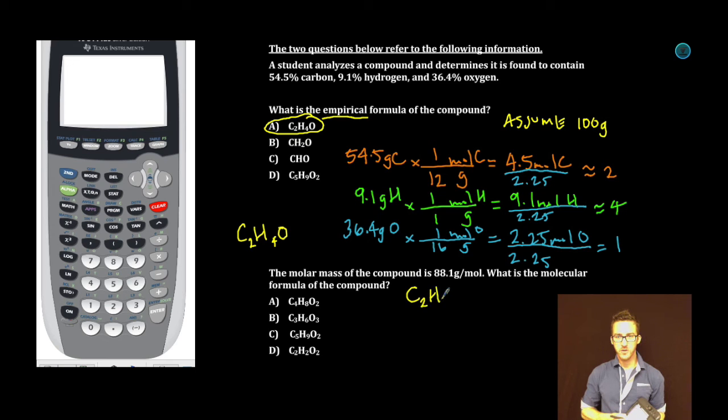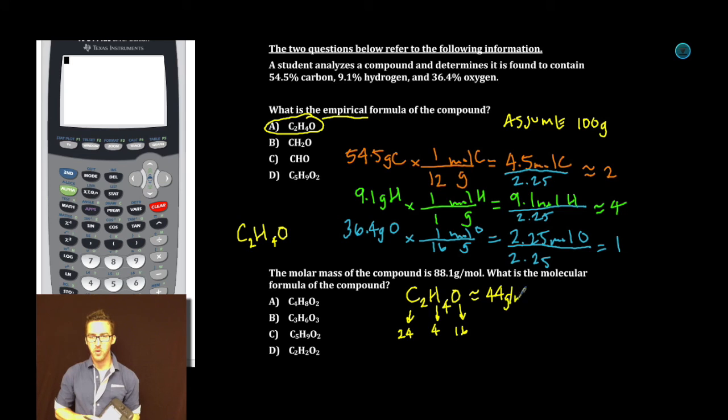Let's take a look at our empirical formula C2H4O. Let's come up with the molar mass of this. Two carbons, about 24 grams. Four hydrogens, about 4 grams. One oxygen, about 16 grams. Add those together: 16 plus 4 plus 24 equals about 44 grams per mole.